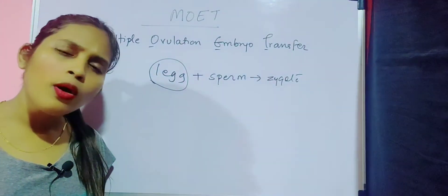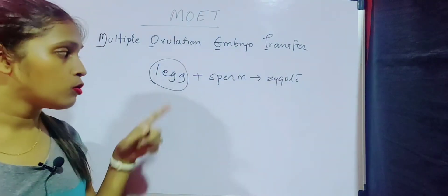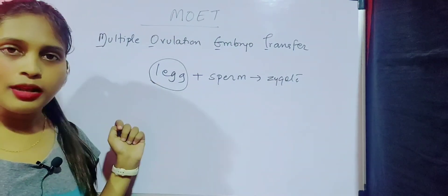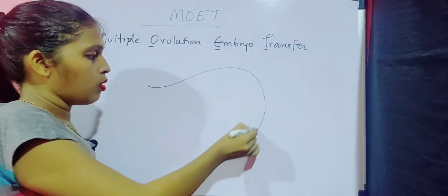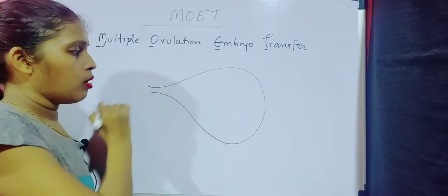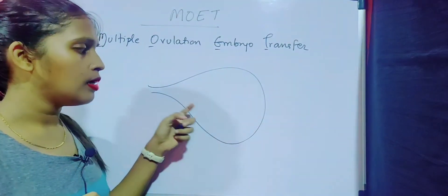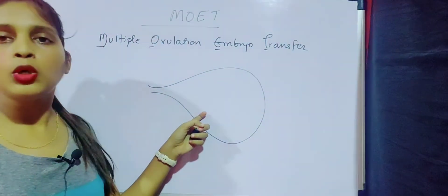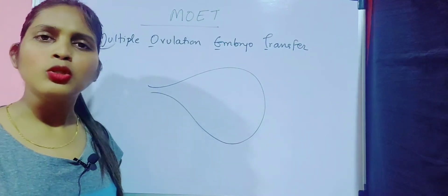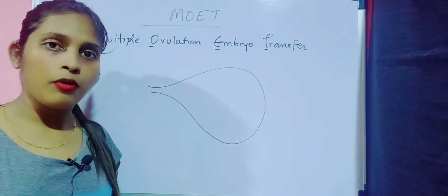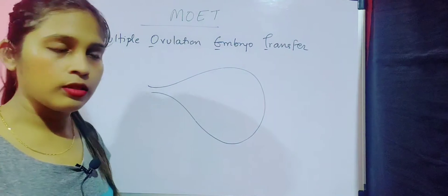Let us see what exactly happens with a female who can produce more than one egg. In a normal ovary, this is an ovary of a female, and inside the ovary there will be egg production taking place. The egg is not directly formed — it is a step-by-step process.